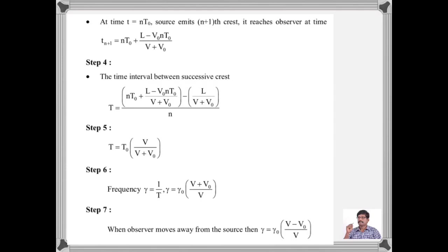If we generalize for after N waves, at T = N·T₀, the source emits the (N+1)th crest, which reaches the observer at time N·T₀ + (L − V₀·N·T₀)/(V + V₀). The time interval between two successive waves — the time period — calculated as T₂ − T₁ gives T = T₀ · V/(V + V₀). Taking the reciprocal to get frequency, the observed frequency ν = ν₀ · (V + V₀)/V.